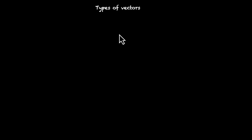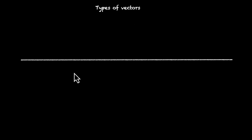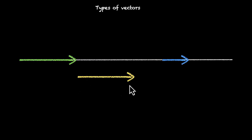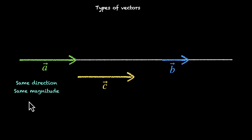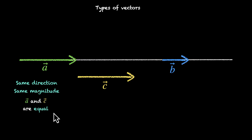Now let's look at different types of vectors. Here's a line; we have a green vector, a blue vector of shorter length, and a yellow vector — let's label them A, B, and C. In an example where A vector and C vector have the same direction, they're both facing right, and they have the same magnitude, their length is the same — then they're called equal vectors. Magnitude and direction are the same, so they're called equal vectors.